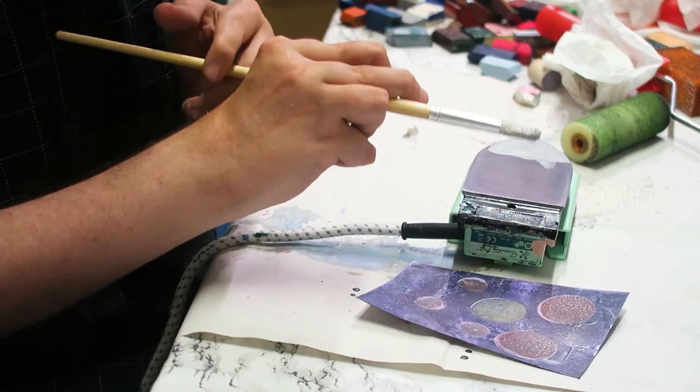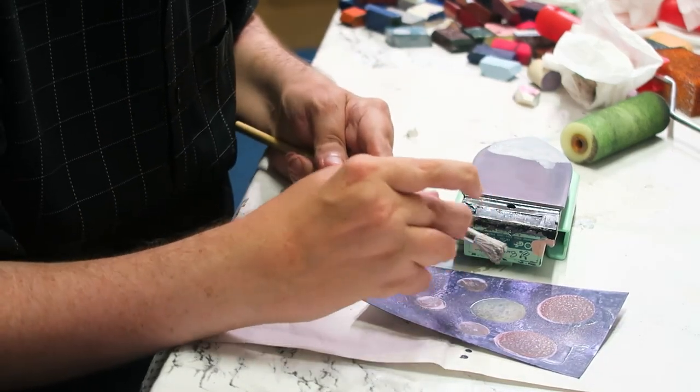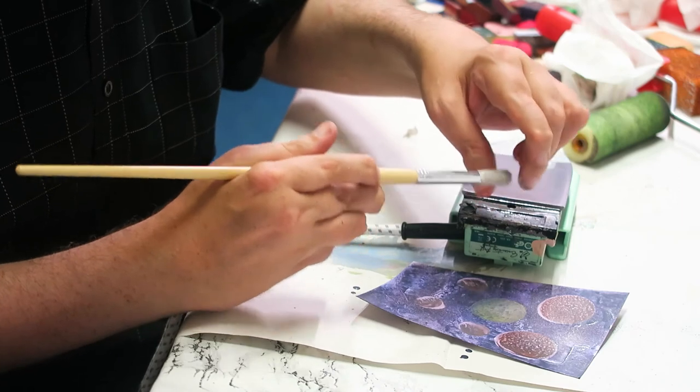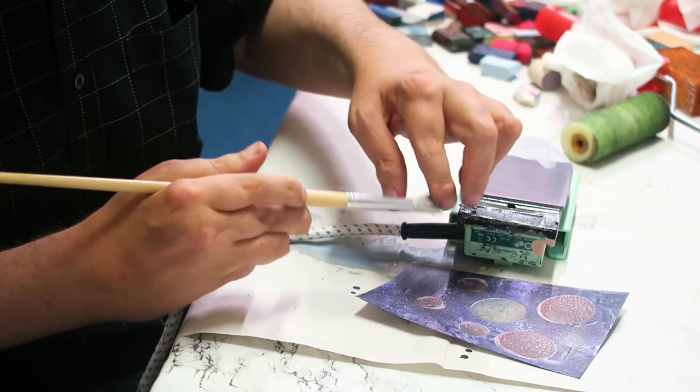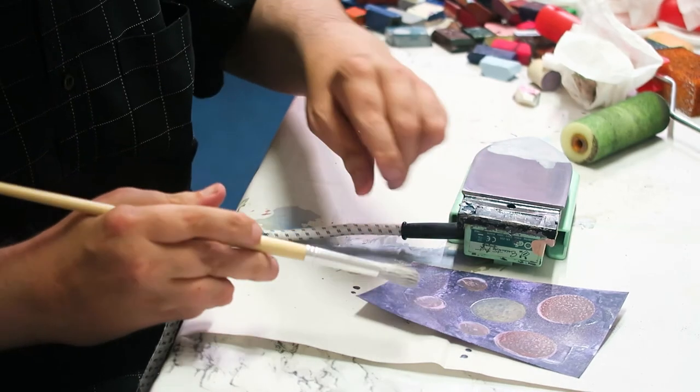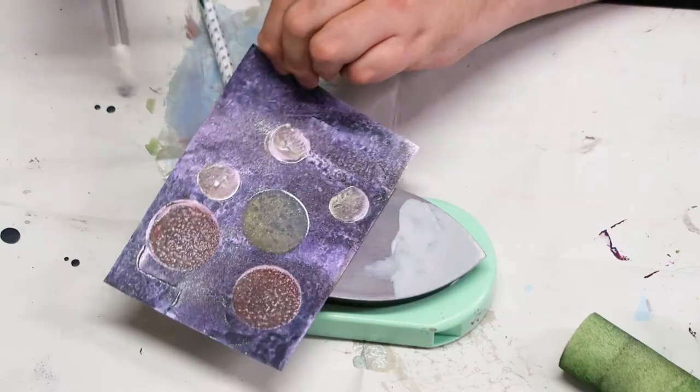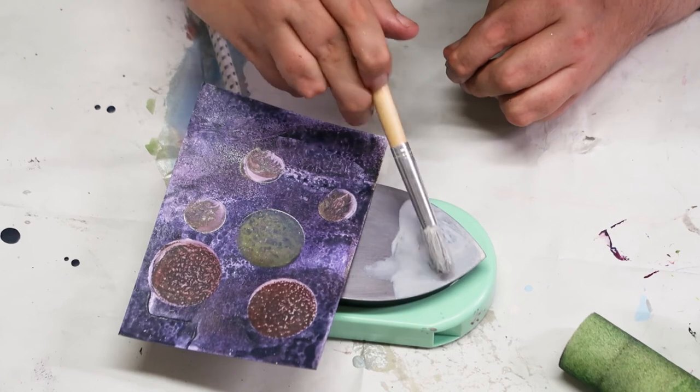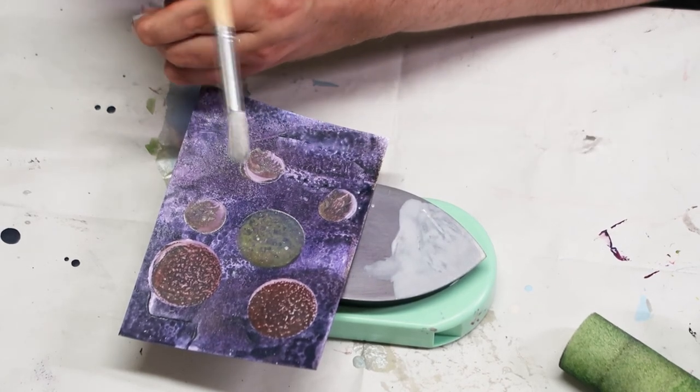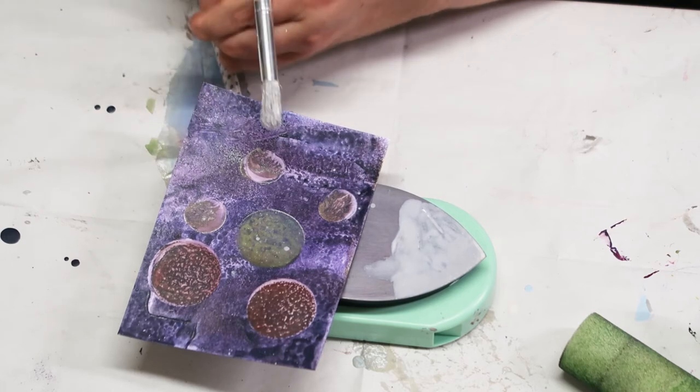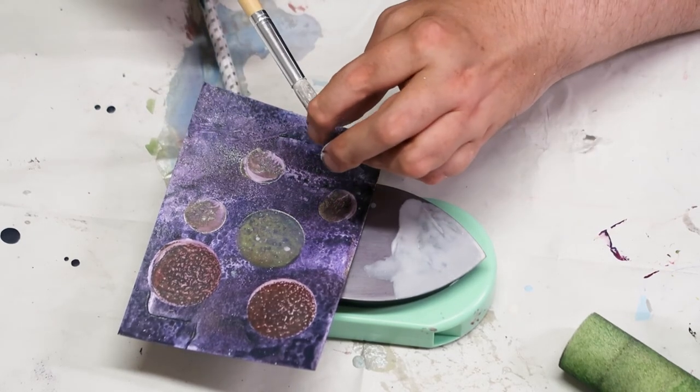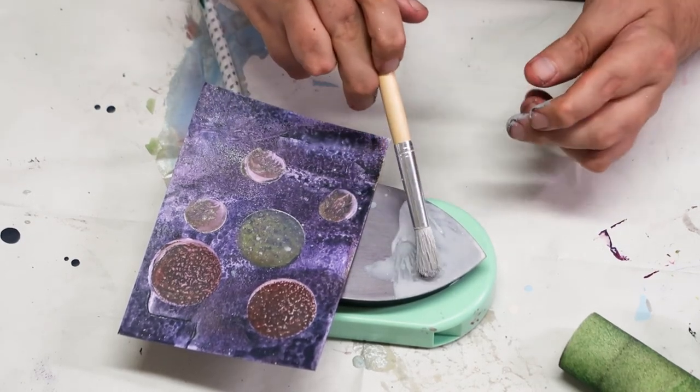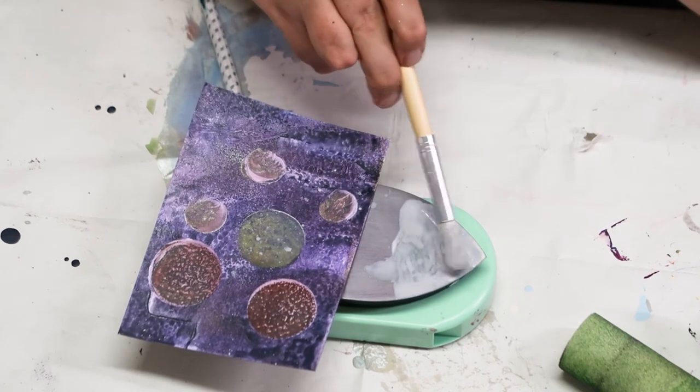Then while the wax is still soft because of the heat, just give it a gentle tap. Actually, I let that get too warm. It's now not quite doing it. It can become a bit too fluid and not quite do what you want. If you want bigger bits, just bang it against your hand. If you want smaller ones, just flick the bristles.